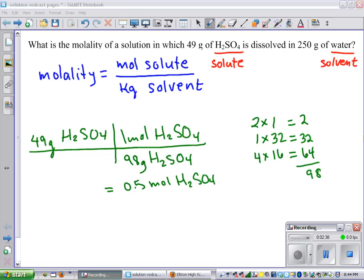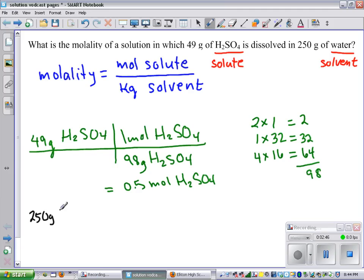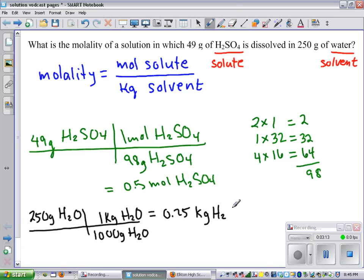We also need to convert the water from grams to kilograms. We have 250 grams of water, and there are 1,000 grams of water and 1 kilogram of water, which equals 0.25 kilograms of water.